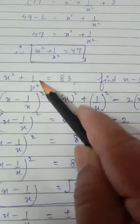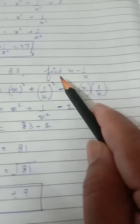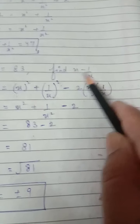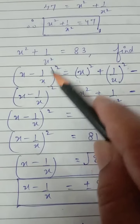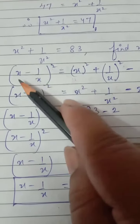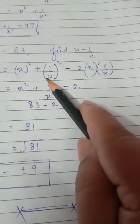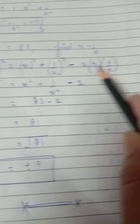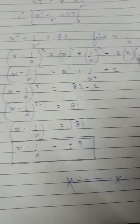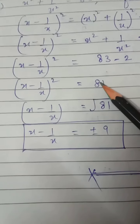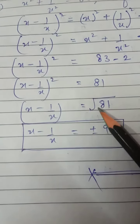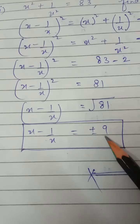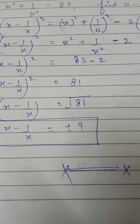Now x² + 1/x² is given and we have to find x - 1/x. So we use the (x - 1/x)² identity, that is (a - b)² = a² + b² - 2ab. Putting the values and after simplification we get 81. Removing the square gives √81, and the value is ±9. This chapter finishes here. Thank you.